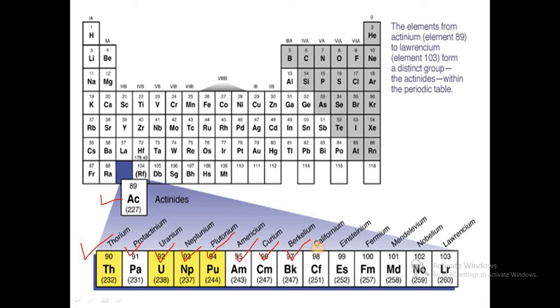Curium, berkelium, californium, einsteinium, fermium, mendelevium, nobelium, and lawrencium. So these are the group of 15 elements called actinide series or 5f series.